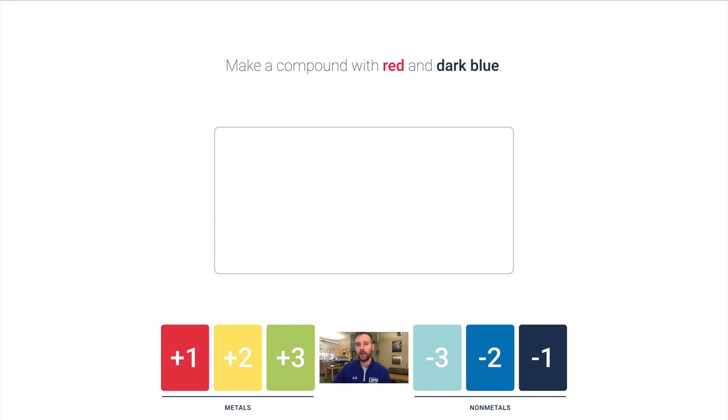Let's start by making a compound between red and dark blue. I want to bring in the smallest number of atoms so that overall I have a charge of zero. I bring in a red, the overall charge is plus one. I bring in a dark blue and when I add up these charges they add up to zero. The plus one is canceled out by the minus one, so you end up having a stable substance.